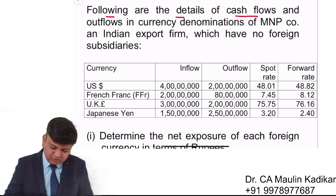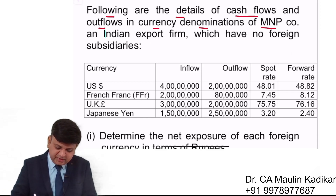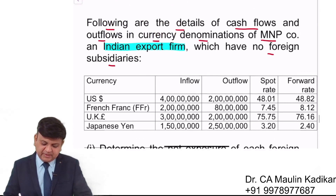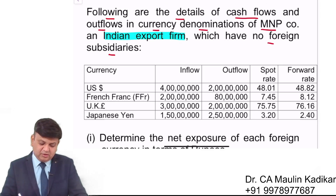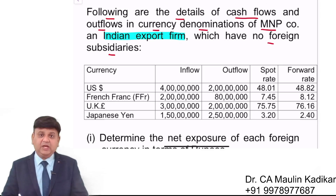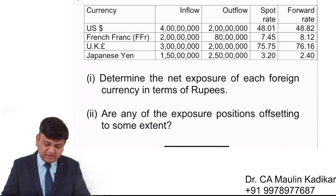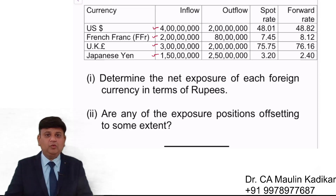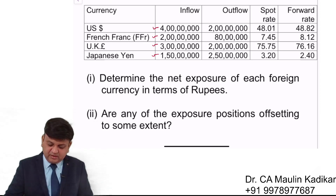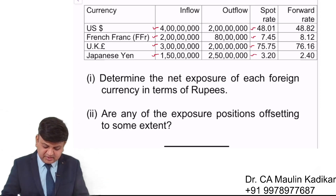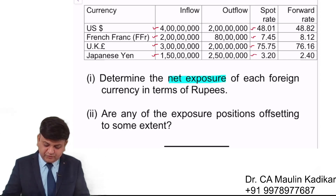The following are the details of cash inflows and outflows in the currency denomination of MNP company in Indian export form, which have no foreign subsidiaries. This is an Indian company whose foreign currency denomination — both inflow and outflow — and their foreign subsidiaries are in terms of dollar, French francs, pound, and yen. We need to determine the net exposure of each foreign currency.